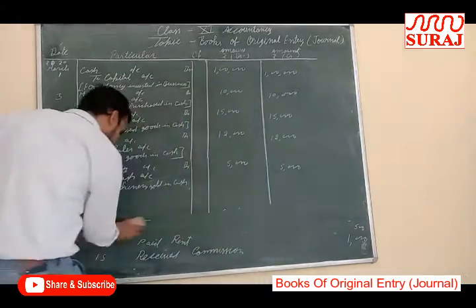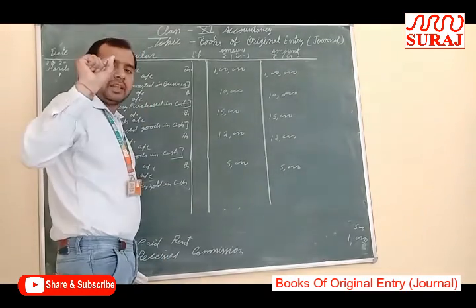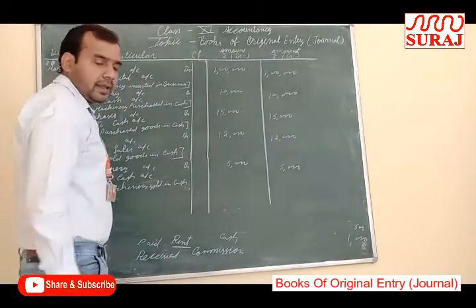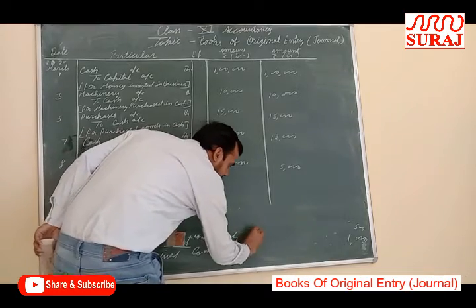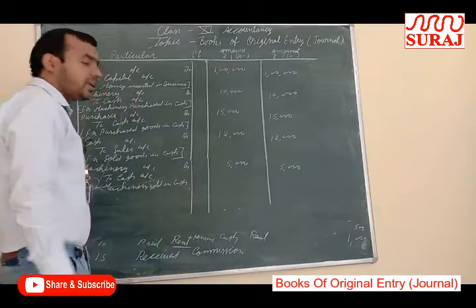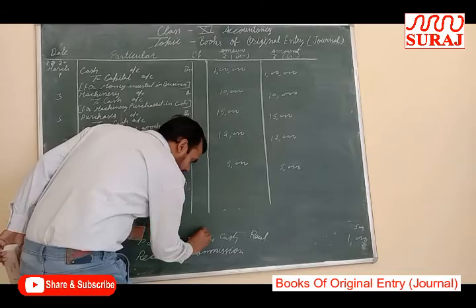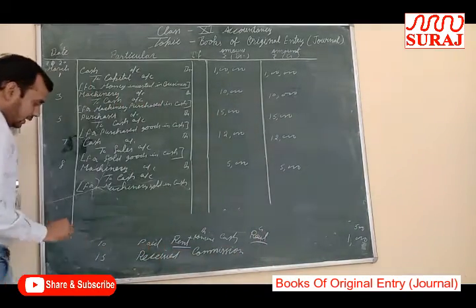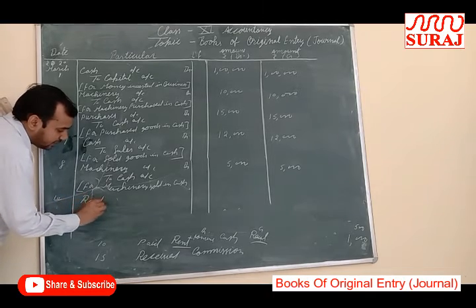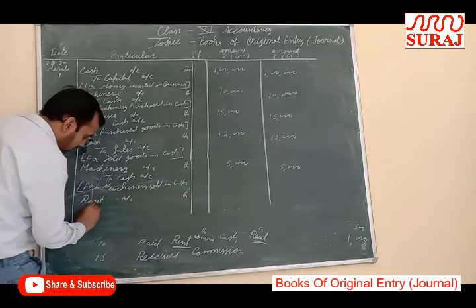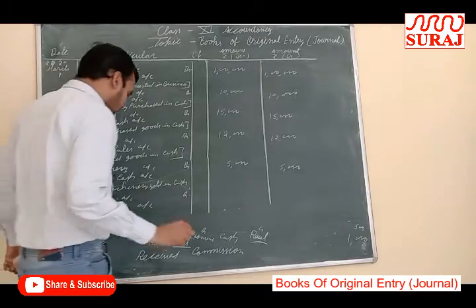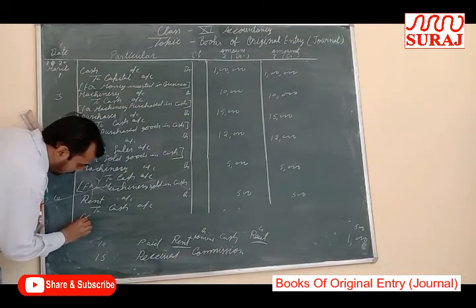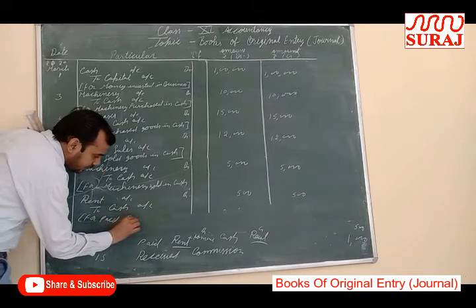Next transaction: Paid Rent Rs. 500. Paid represents an expense; received represents income. Entry will be through rent and cash accounts. Rent is a nominal account; cash is a real account. Nominal account rule: debit all expenses and losses, credit all income and gains. Paid represents expense, so rent is an expense and rent will be debited. Cash real account: debit what comes in, credit what goes out. Cash goes out from the business, so cash will be credited. Entry: Rent Account debit to Cash Account, Rs. 500. Narration: Paid rent.